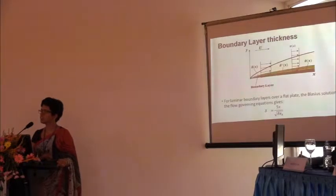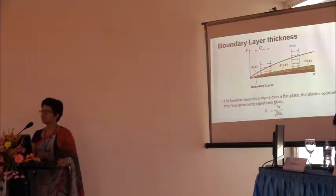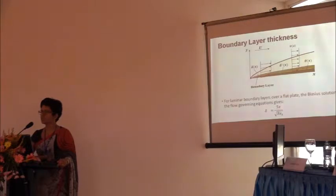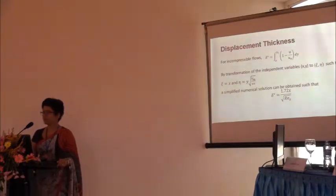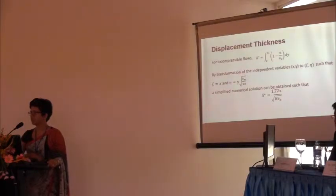The boundary layer is a region very adjacent to the walls — a region of retarded flow relative to the free stream velocity. Because of this, the free stream flow faces some deflection and the undisturbed flow area is reduced due to the presence of the boundary layer. For a laminar boundary layer over a flat plate, the simplified solution expresses boundary layer thickness in terms of the Reynolds number and the distance along the flow. The displacement thickness is another important parameter — it is the distance from the streamline just outside the boundary layer indicating how much it is deflected from the wall due to the boundary layer effect. It can also be expressed in simplified form in terms of distance along the flow x and the Reynolds number.